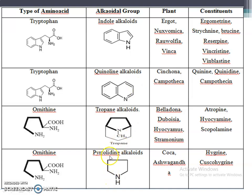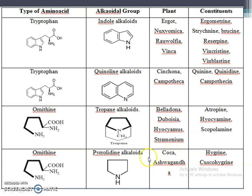Next is pyrrolidine alkaloids. If you close the ring structure, it gives the pyrrolidine ring, and this is also obtained from ornithine. Pyrrolidine alkaloids include coca and ashwagandha - note the difference between coca (pyrrolidine alkaloid) and cocoa with two O's (purine alkaloid). The chemical constituents are hygrine and cuscohygrine.